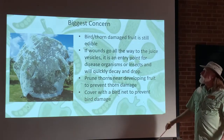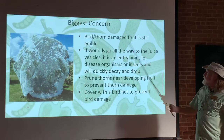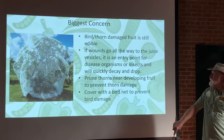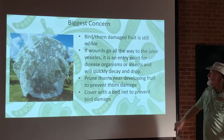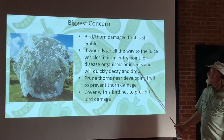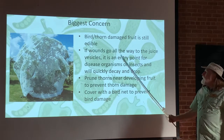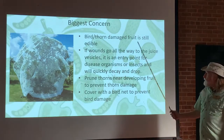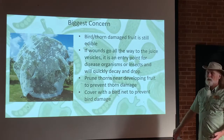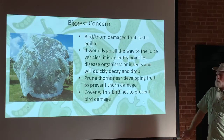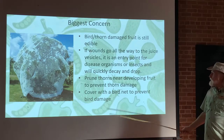The biggest concern with both thorn and bird damage is that it creates infection points for disease. The fruit is still edible if the wounds are only superficial, but if they go all the way into those juice vesicles within the fruit, you're going to be inviting disease organisms and insects in and the fruit will quickly decay and drop off the tree. To prevent thorn damage, keep thorns away from any developing fruit — if you see a thorn sticking out near developing fruit, go ahead and turn the thorn off to protect it.